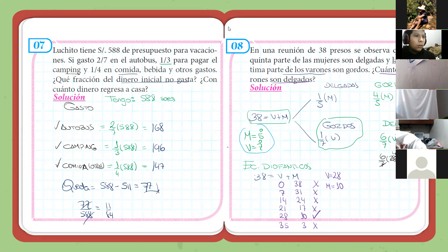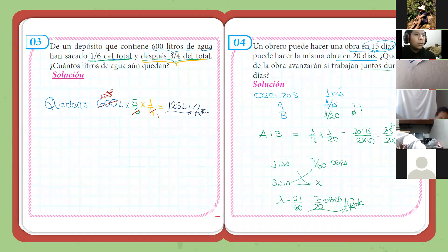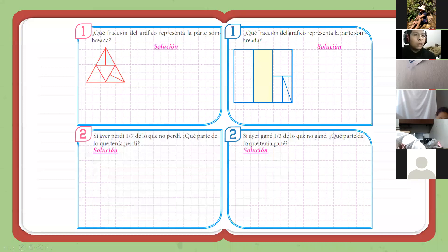Vamos, entonces, al problema, los problemas del 1 al 4. Problemita número 1. Dice: ¿qué fracción del gráfico representa la parte sombreada?